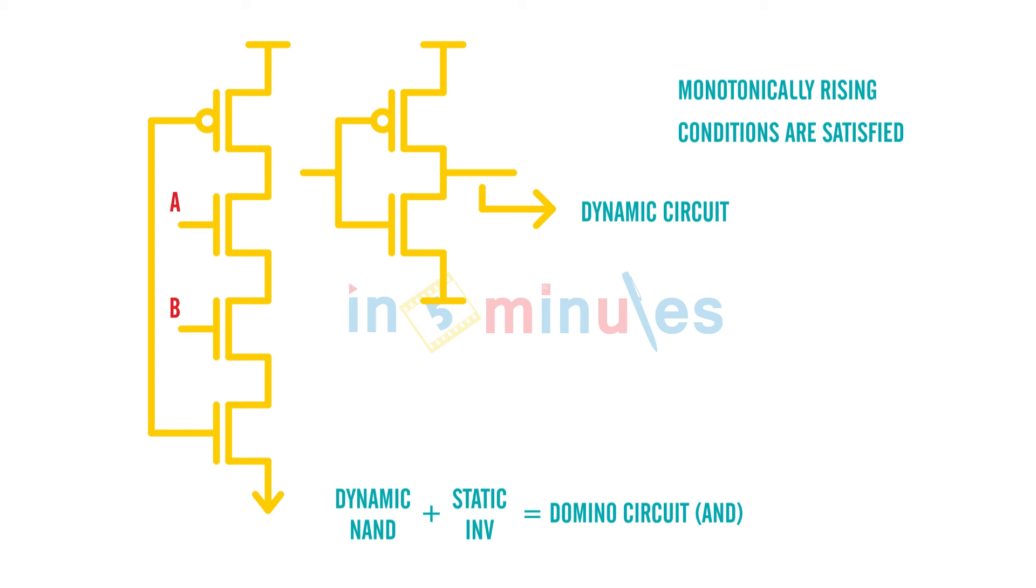So similarly, we can make a domino NOR as well. Let's quickly do that. So we know the expression for NOR is Y equal to A plus B, the whole bar. For dynamic circuits we know that, the bar, pull-down, pull-up—there's nothing but a pMOS, NMOS. There's nothing but my dynamic circuit, dynamic NOR.